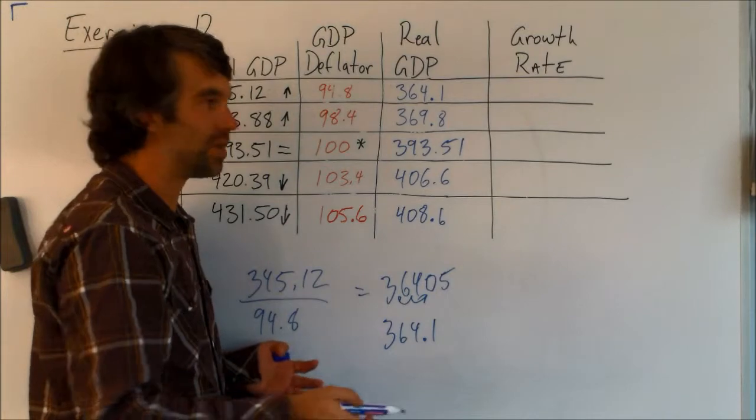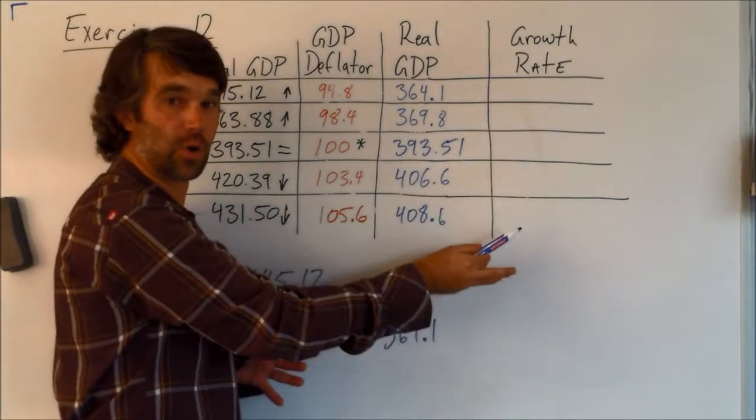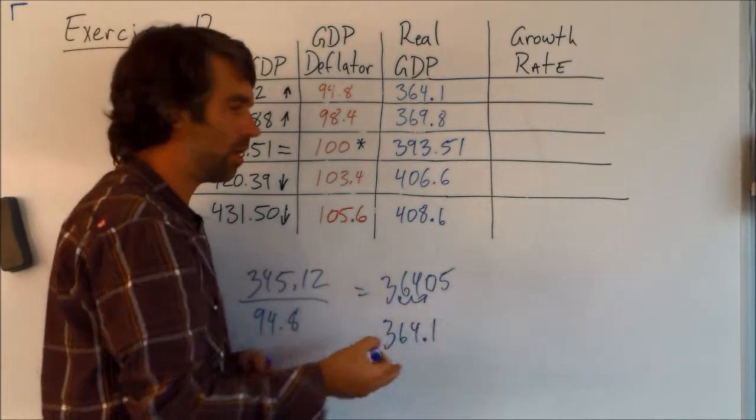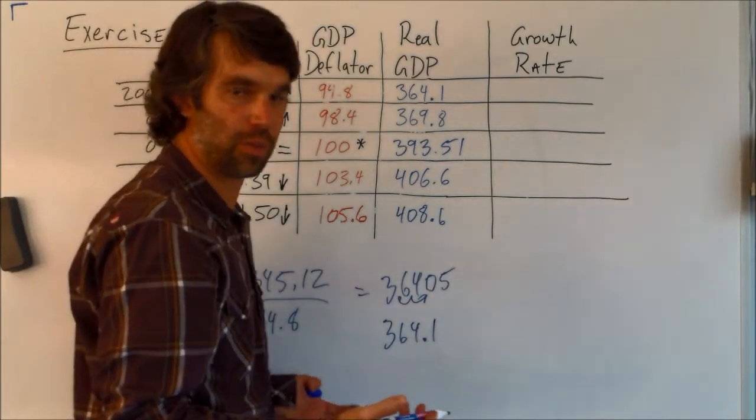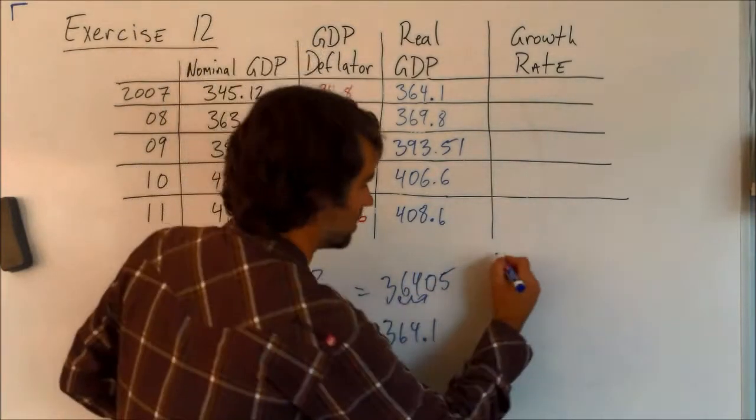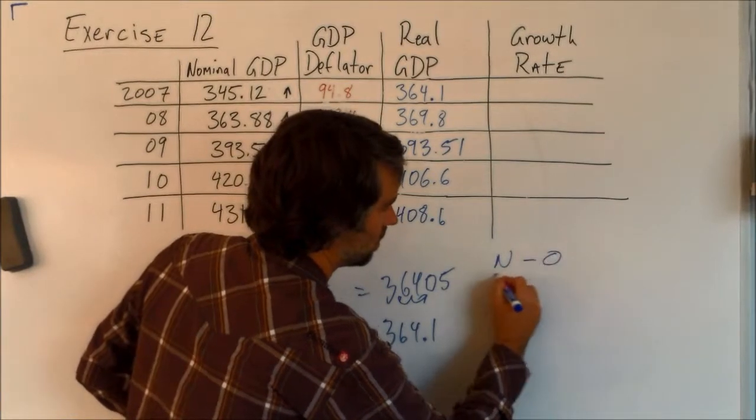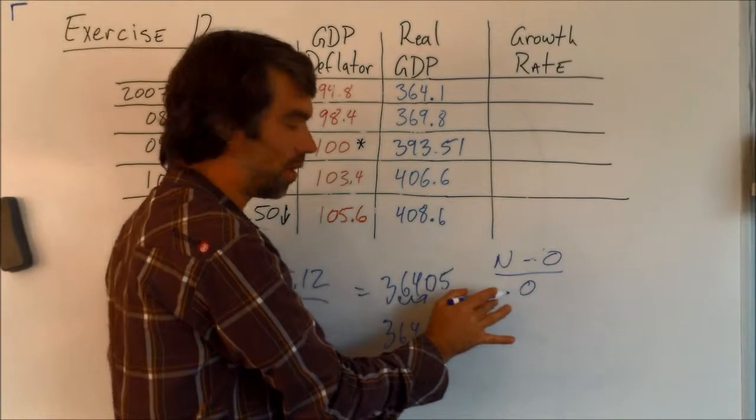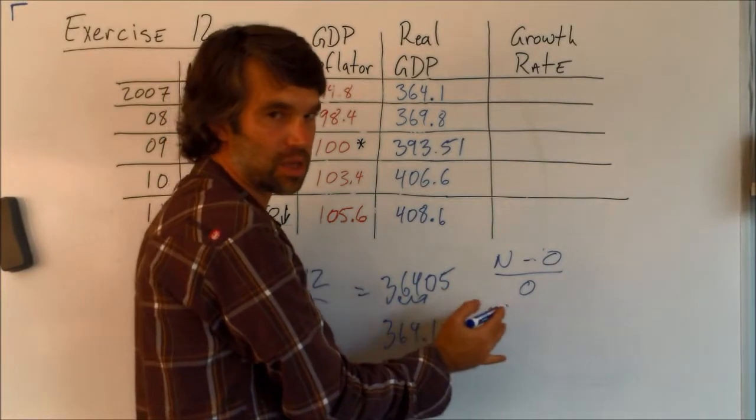Last thing we need to do is we need to figure out this last column, the growth rate. All of this was just sort of prologue. So for this, it's our very simple formula. We've worked with it a bunch. It's new minus old divided by the old.